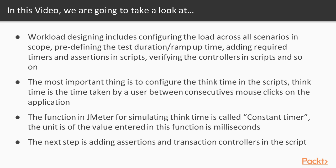The most important thing is to configure the think time in the scripts. Think time is the time taken by a user between consecutive mouse clicks on the application. For example, on the login page, a user might take around 10 to 15 seconds for entering his credentials. The function in JMeter for simulating think time is called constant timer.